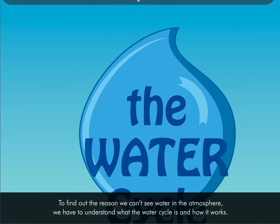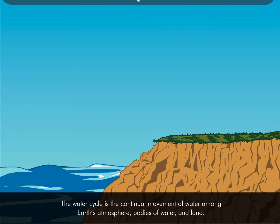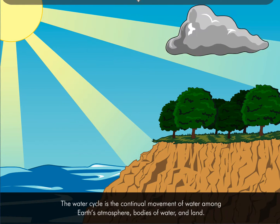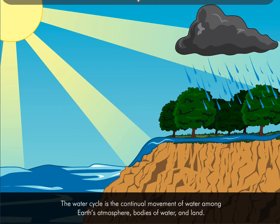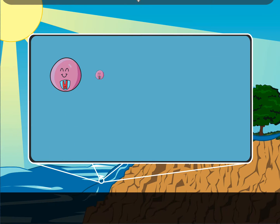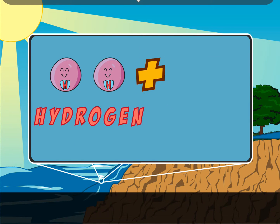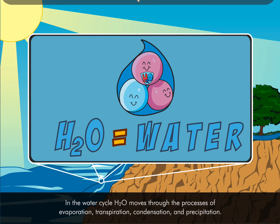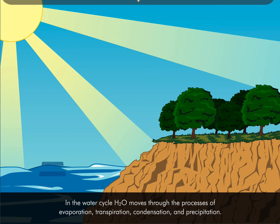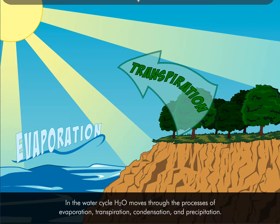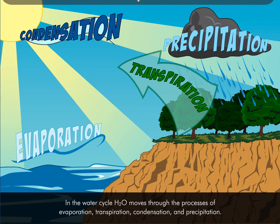The water cycle is the continual movement of water among Earth's atmosphere, bodies of water, and land. Remember that a molecule of water consists of two hydrogen atoms and one oxygen atom. In the water cycle, H2O moves because of the processes of evaporation, transpiration, condensation, and precipitation.